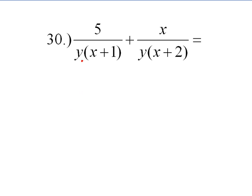Now, we have to find the least common denominator. Well, our y is common, our x plus 1 and x plus 2. So, let's reemphasize what our least common denominator is: y times x plus 1 times x plus 2. That will become our least common denominator.